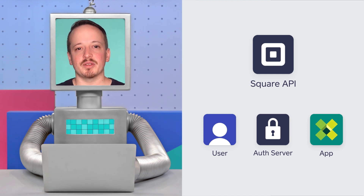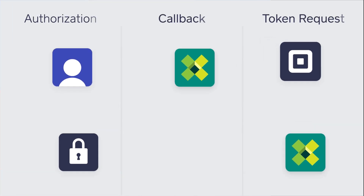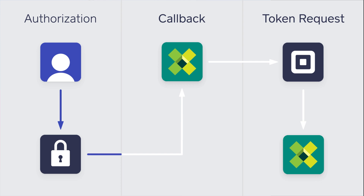Now that we know all the components, let's go over the different stages of the OAuth flow. There are basically three stages: authorization, the callback, and requesting a token. First, in the authorization stage, we send a user over to Square to grant permission to our application. Then in the callback stage, Square redirects the user back to our application with an authorization code for obtaining an access token. Then in the final stage of requesting a token, our backend server uses that authorization code obtained in the callback stage to request an access token.